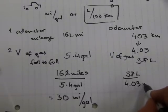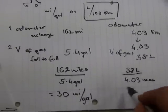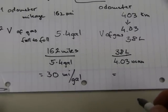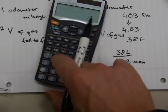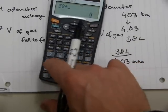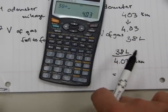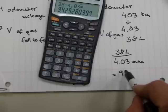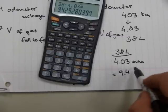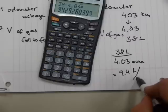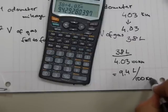When you do the division, you're going to get another number out of it. 38 divided by 4.03, and that equals 9.4 liters over 100 kilometers.